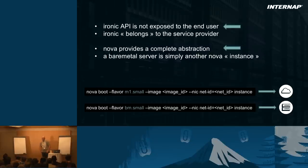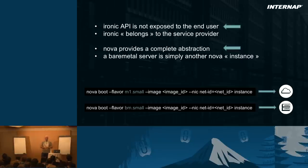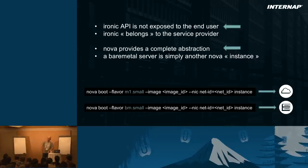The Ironic API is not exposed to the end user — that's fundamental. Ironic belongs to the service provider. We're service providers, so all these servers are ours and we simply lend them to customers. Nova provides a complete abstraction of Ironic: with two Nova boot commands, the only thing that changes is the flavor. By changing the flavor with the same exact Nova boot command, you'll end up with a virtual machine or a bare metal server — that's a powerful abstraction.